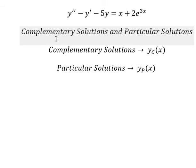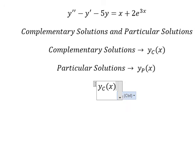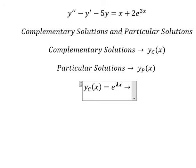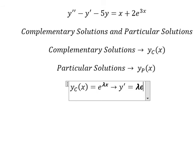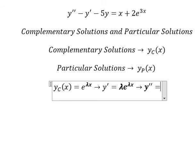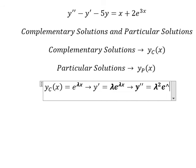Now I will go to the complementary solution. I will put y equals e to the power of lambda x. If I take the first derivative, I get lambda e to the power of lambda x. Then for the second derivative, that should be lambda squared e to the power of lambda x.